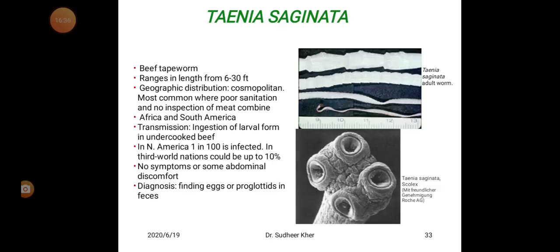Symptoms include no symptoms or some abdominal discomfort and abdominal cramps. Diagnosis is by finding eggs or proglotids in feces.